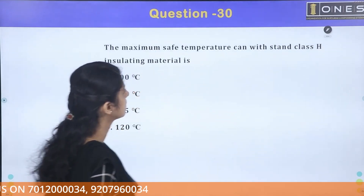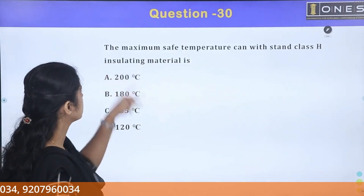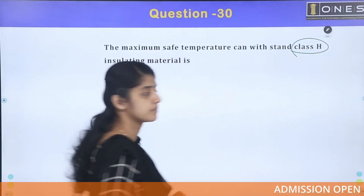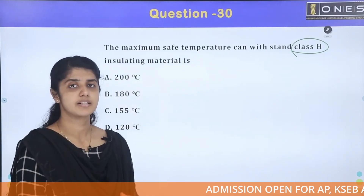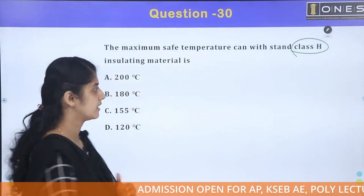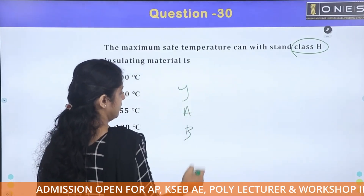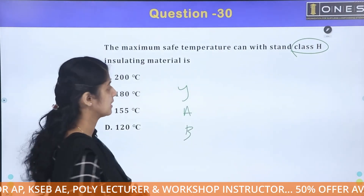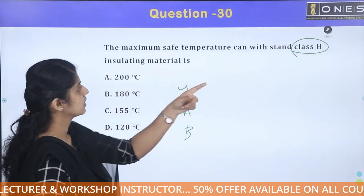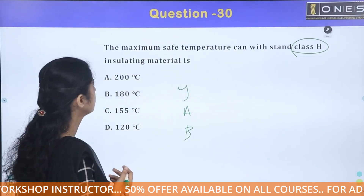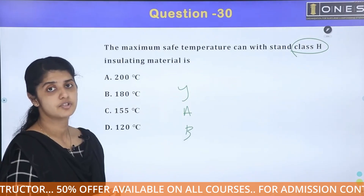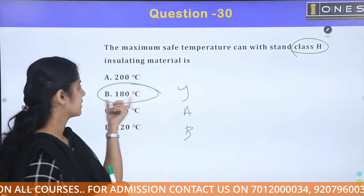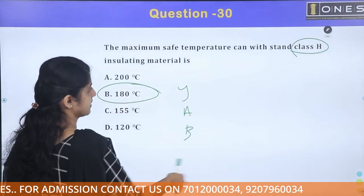The maximum safe temperature that a Class H insulating material can withstand — insulation classes include A, B, E, F, and H. Class H insulating material has a temperature range of 180 degrees Celsius.